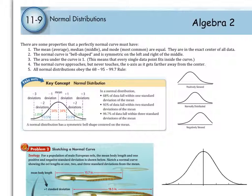First off, number one: the mean, the median, and the mode are all the same number in a normal distribution. A normal curve is bell-shaped. It's symmetrical on the left and the right. The area under the curve is one, which means that every single data point fits inside the curve. The normal curve approaches but never reaches the x-axis as it gets further away from the center.